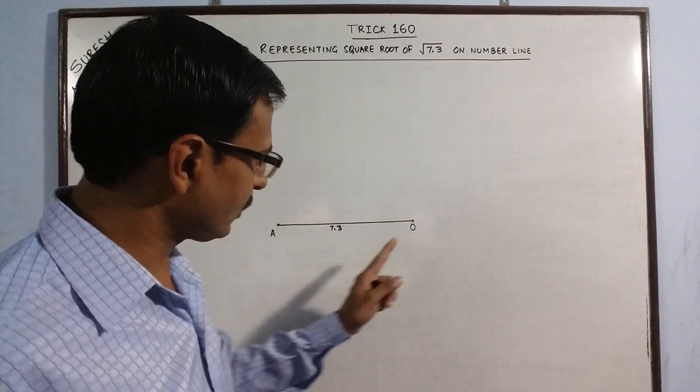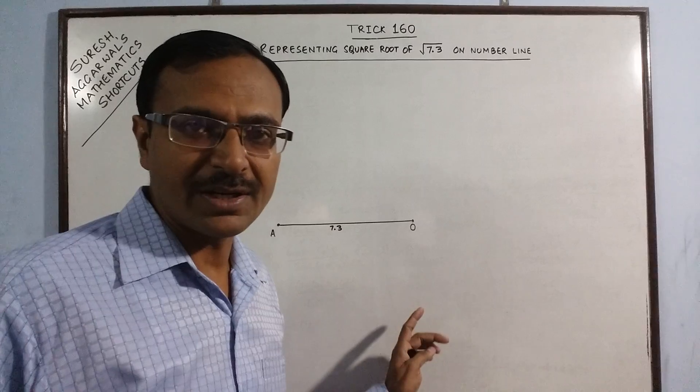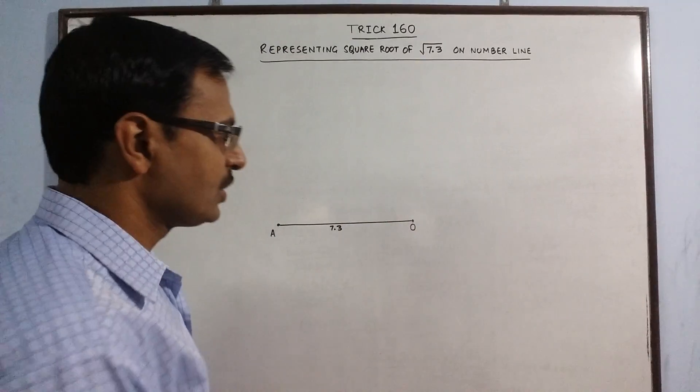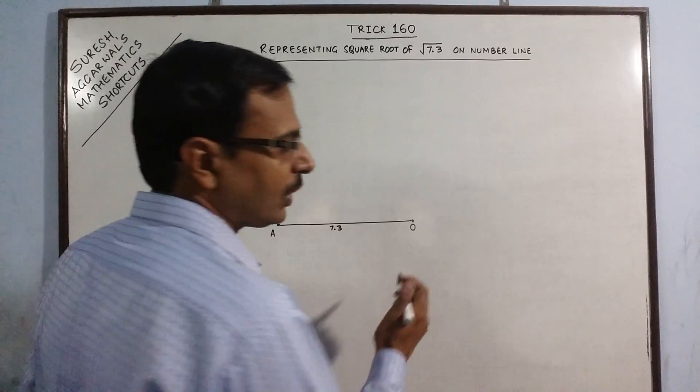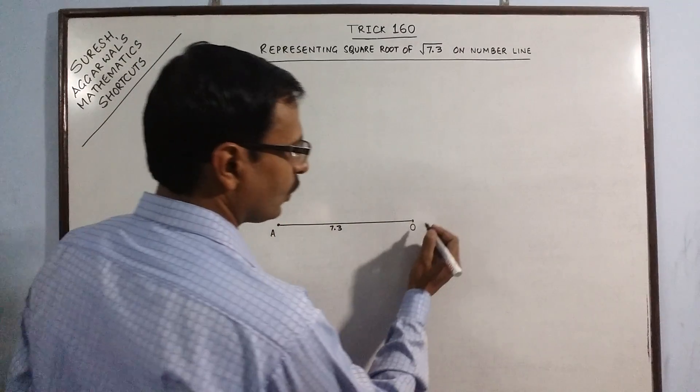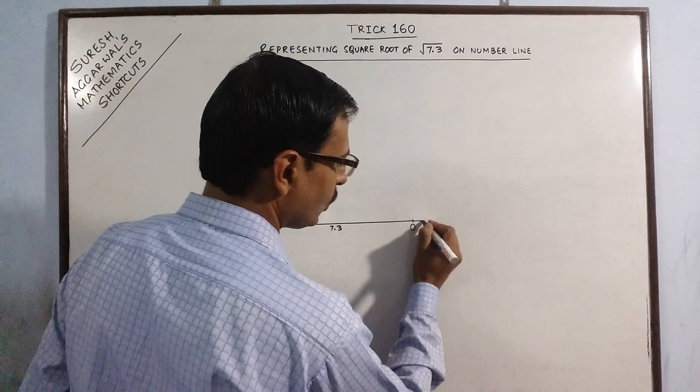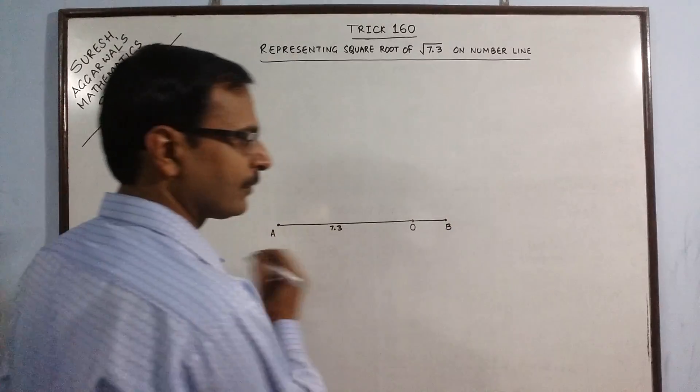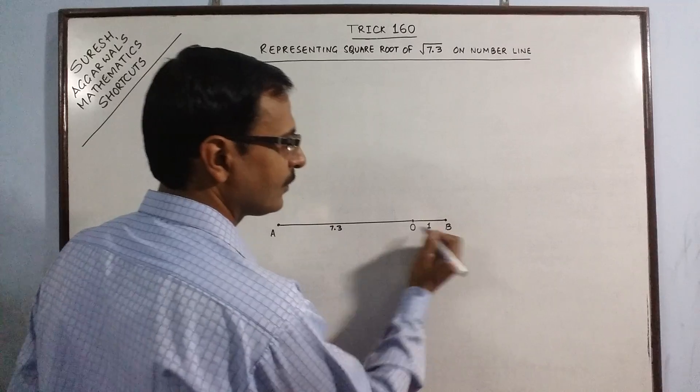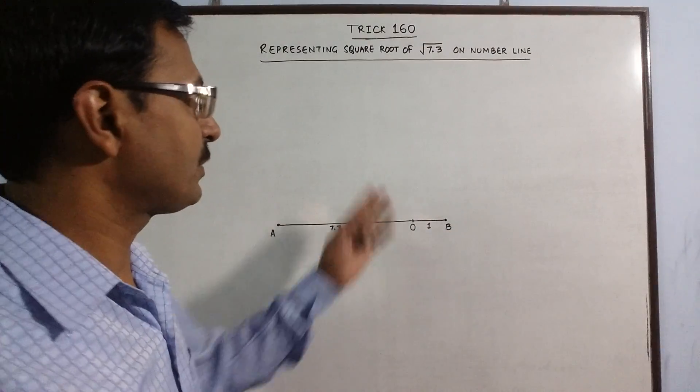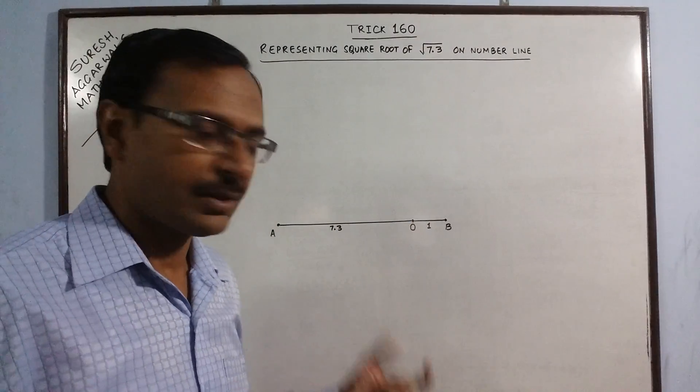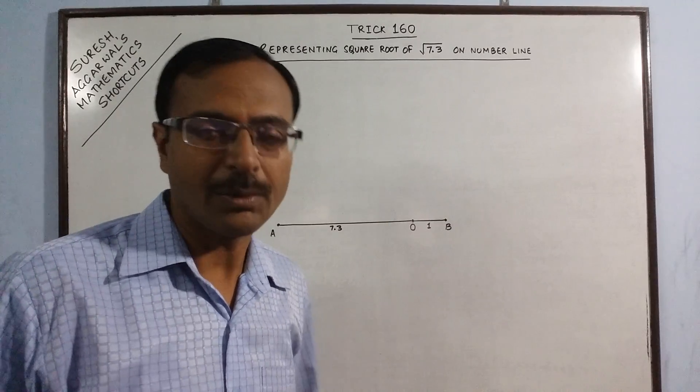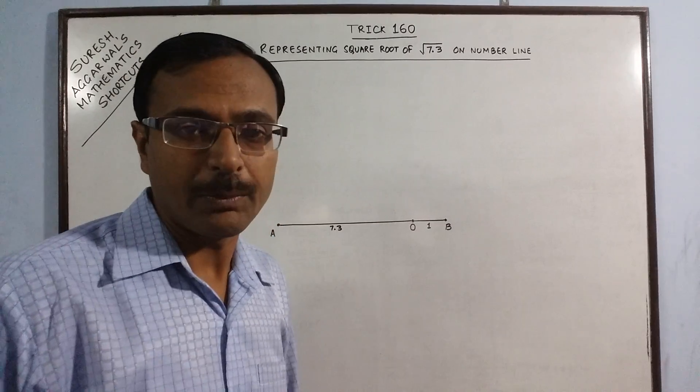We will be measuring the distance of √7.3 starting from O, so now I will produce this AO to 1 centimeter more and get to a point B. Whenever you have to represent square root of a decimal number, draw that much length line and then produce it by 1 centimeter more or 1 unit more.